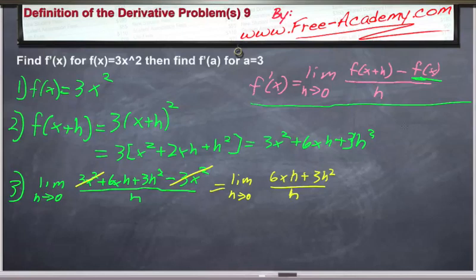we have an h in every single term in the numerator. So we can cancel out a single power of h in the numerator. And this becomes the limit as h goes to 0 of 6x + 3h.